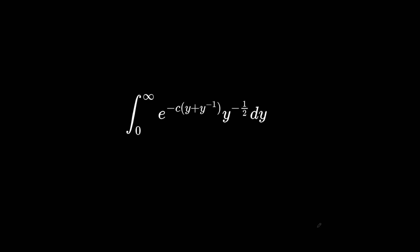So first things first we're gonna write it so it's a little more clear: integral between 0 and infinity, e to the minus c times (y plus 1 over y), and that's all over the square root of y, dy.